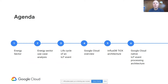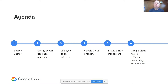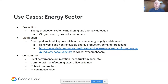The agenda today: first, I talk about the energy sector. Second, about use cases in the energy sector. Third, we look at the lifecycle of one event and what can happen to it throughout its life, to get an understanding of the complexity involved, especially when interfacing with other systems. I give a brief overview of Google Cloud, then go over the InfluxDB TIC architecture, and then talk about a wider architecture with concrete Google services.